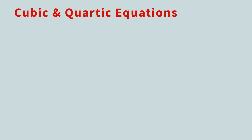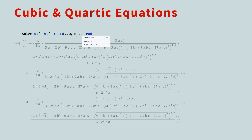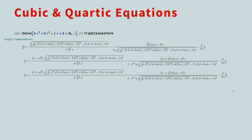As we move beyond linear and quadratic equations, we'll encounter results that may be unfamiliar. For example, if you solve a general cubic equation for x, you get the solutions from the lesser-known cubic formula. To make this easier to read, the three solutions can be displayed in traditional math notation. This formula has been around for hundreds of years, but due to its complexity, students rarely memorize it.